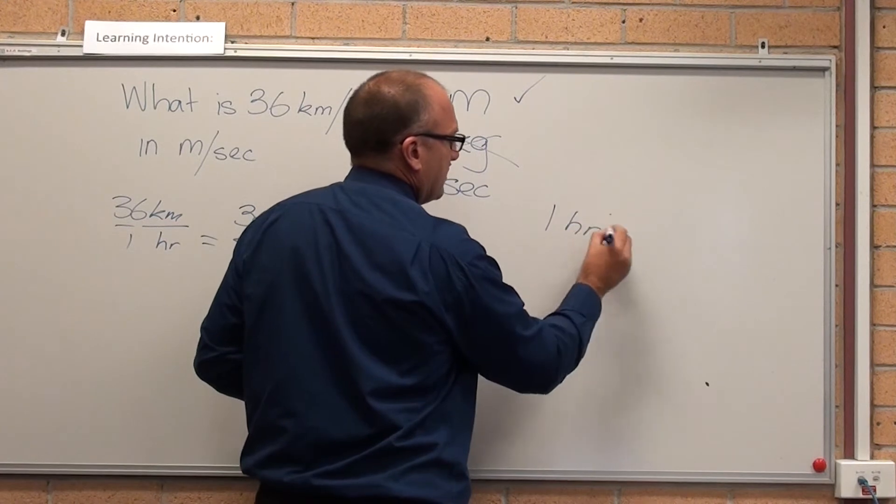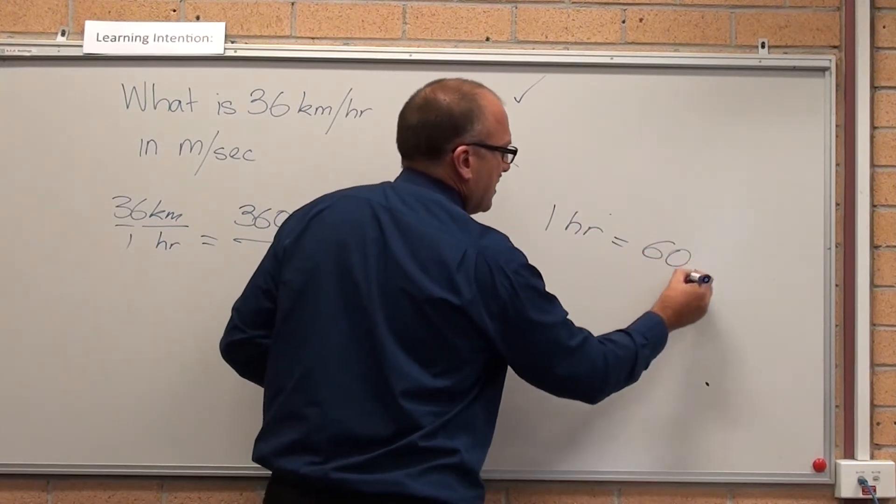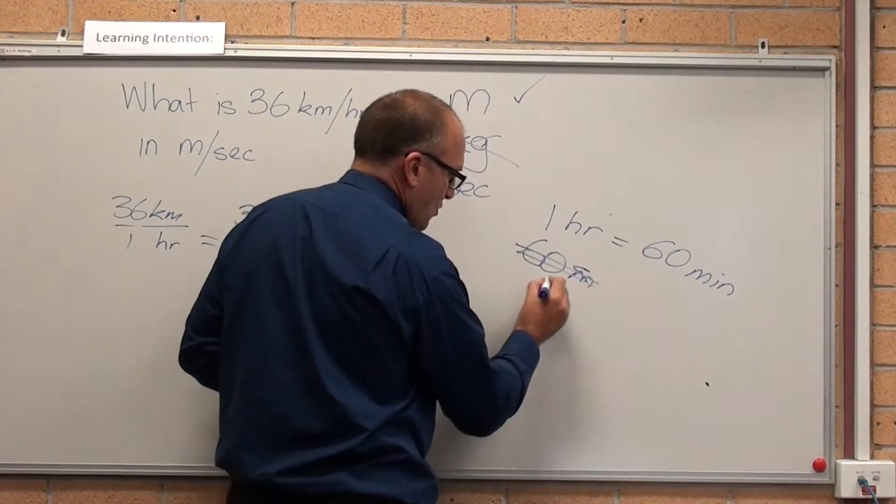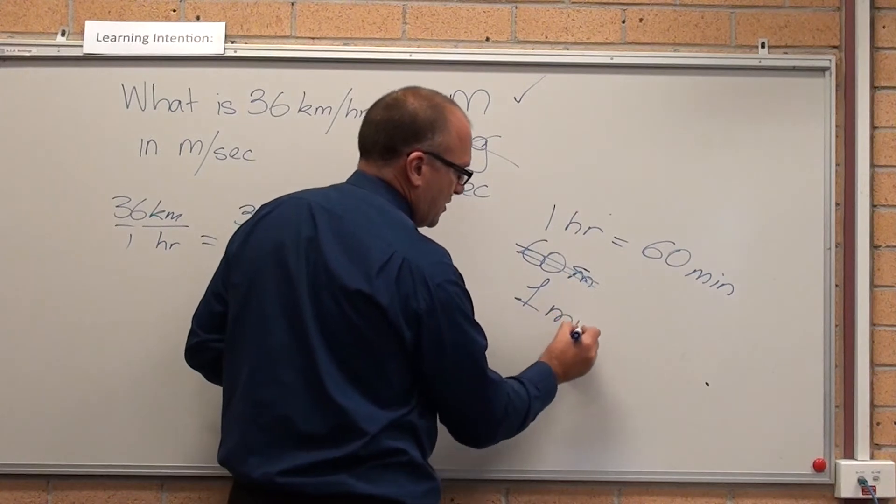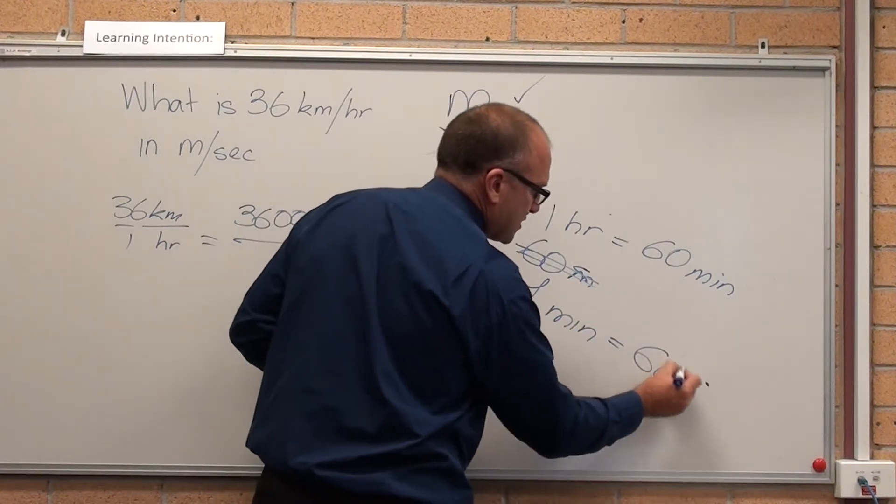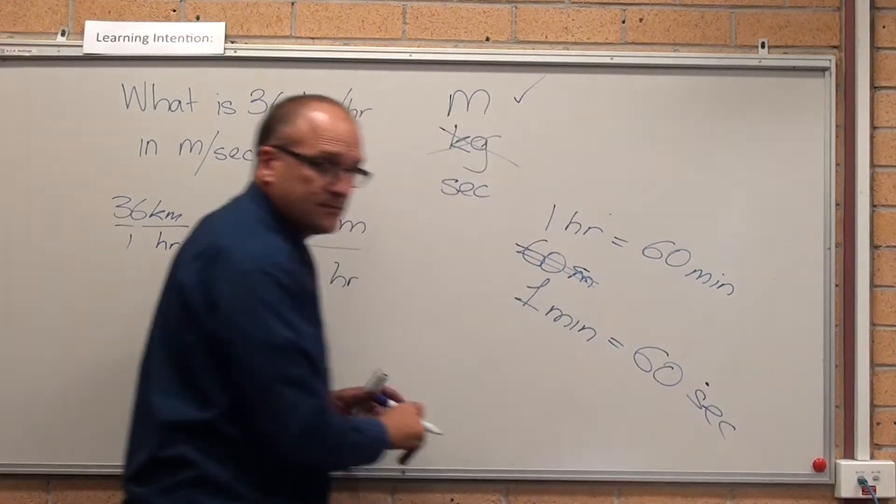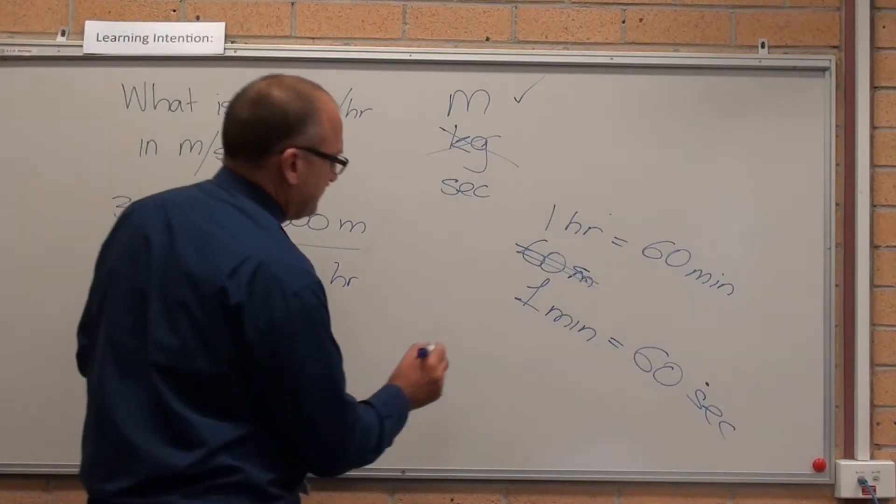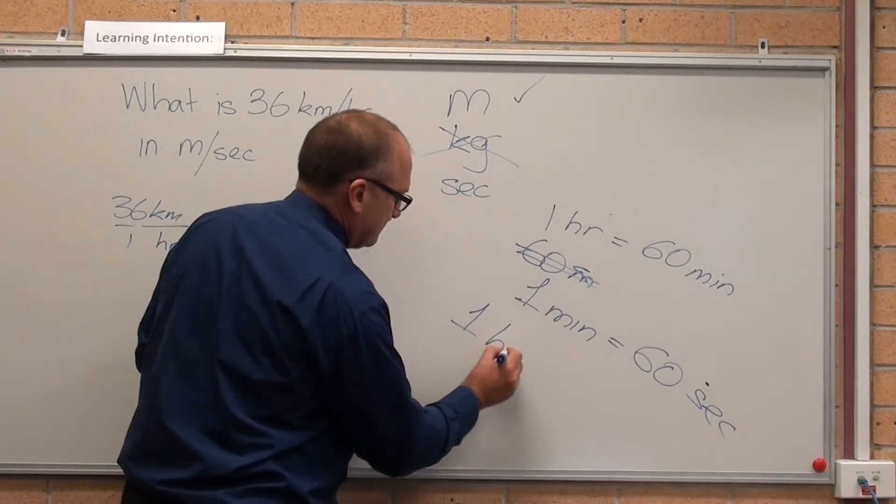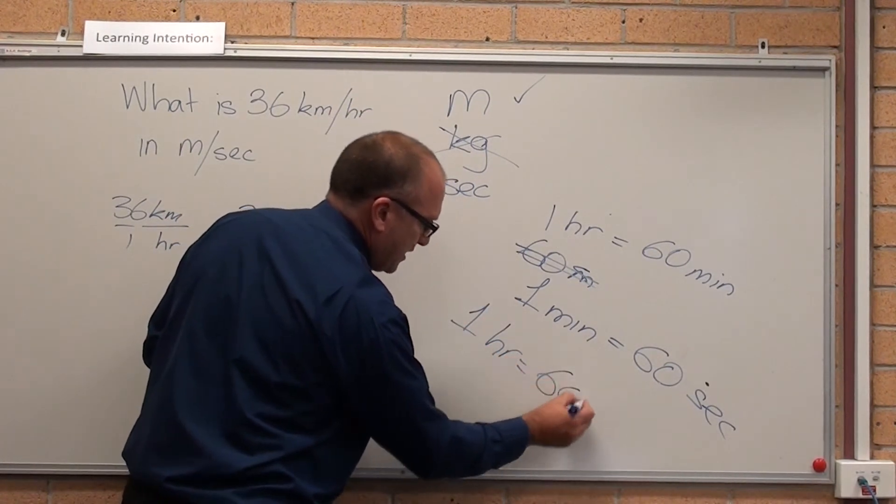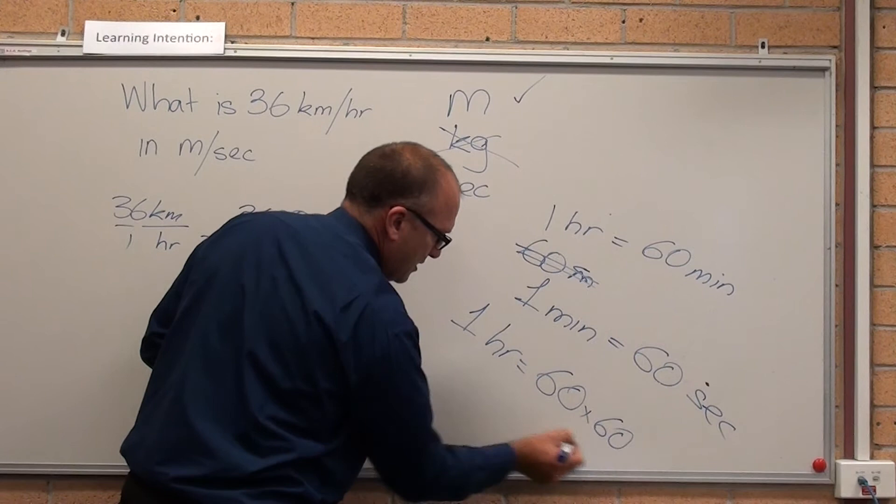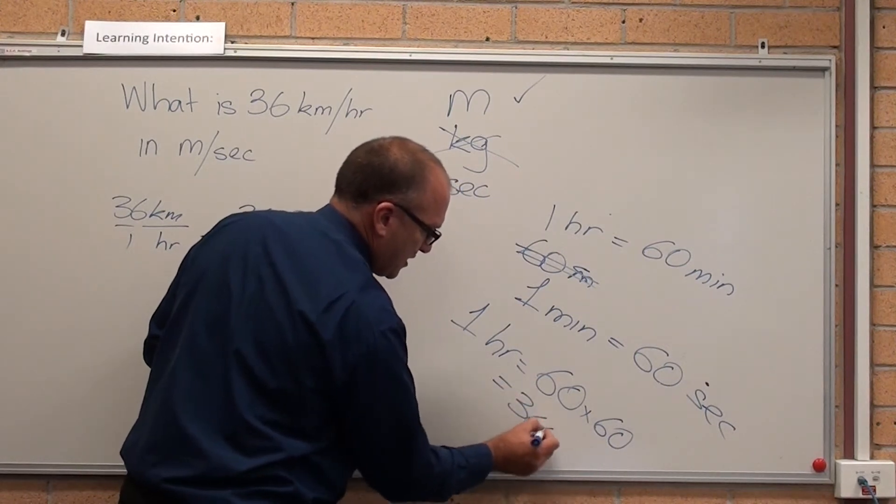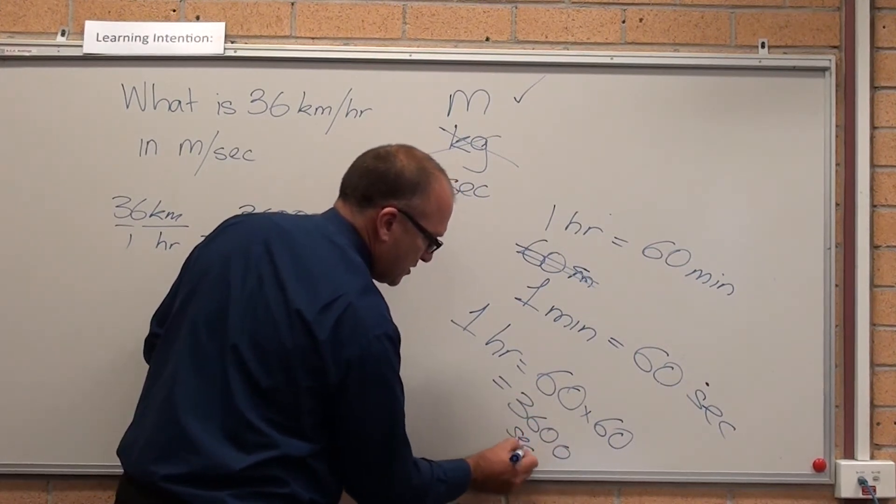So, one hour equals 60 minutes. One minute equals 60 seconds. So that means that in one hour equals 60 lots of 60, equals 3,600 seconds.